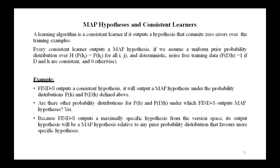If we assume a uniform prior probability distribution over H — that is p(h_i) equal to p(h_j) for all i and j — and if we assume deterministic noise-free training data, where p(D|h) equals 1 if D and h are consistent and 0 otherwise, then we can say that it is deterministic noise-free training data.